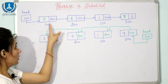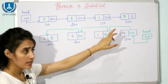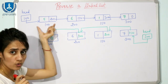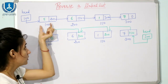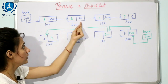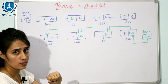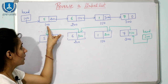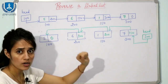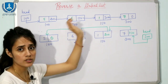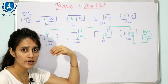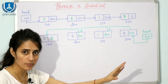Suppose this is a linked list with four nodes. Each node has a data part and an address part, which contains the address of the next node. The addresses of these nodes are 100, 200, 150, and 300. Note that addresses don't have to be in increasing or decreasing order — any random address can be assigned in memory.